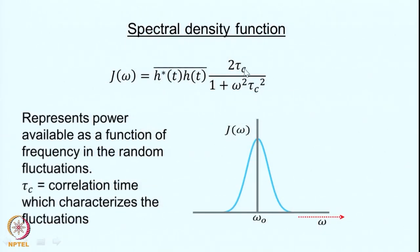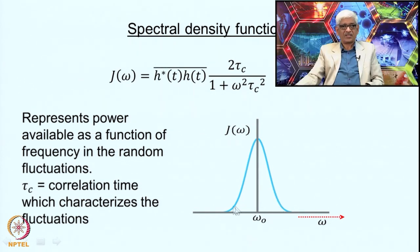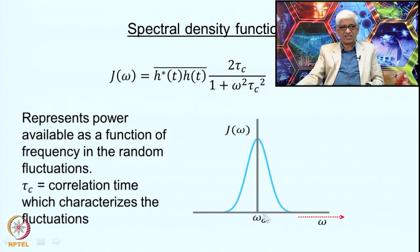We can now look at the mechanisms in more detail. It is the dipole-dipole interaction which causes the relaxation. Recall the transition probability expression for RF-induced transitions: the interaction between the RF and the magnetic dipole involves μ·H₁. Here, the perturbation causing the transition is the dipole-dipole interaction between two magnetic dipoles, represented by the dot product I₁·I₂, where I₁ and I₂ are the spin operators for the two interacting spins.